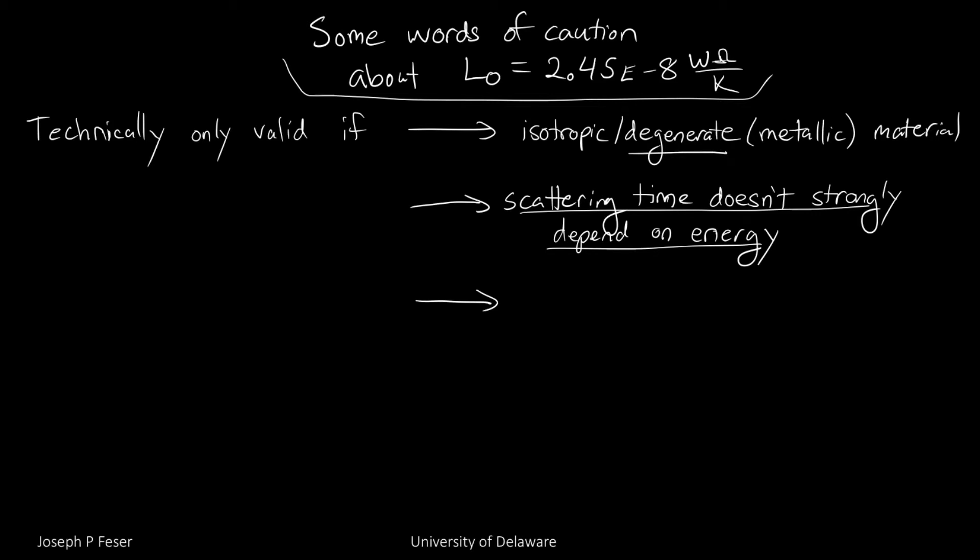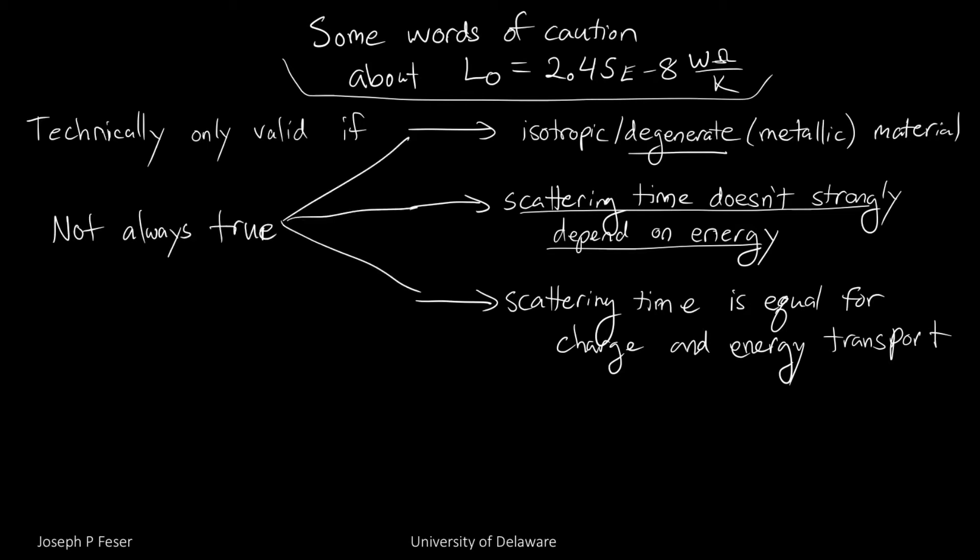And thirdly, we needed the scattering time in order to be able to take the ratio of the thermal conductivity to the electrical conductivity. We use the same scattering time when we did that calculation, meaning that we think that the scattering time is the same for charge transport and for energy transport. And it turns out none of those three assumptions is always true. There are a lot of cases where that is not true.